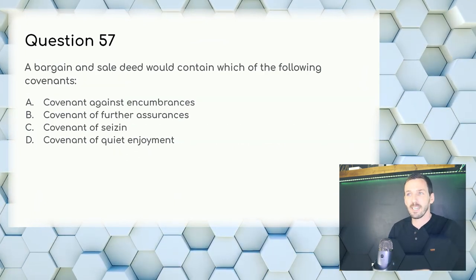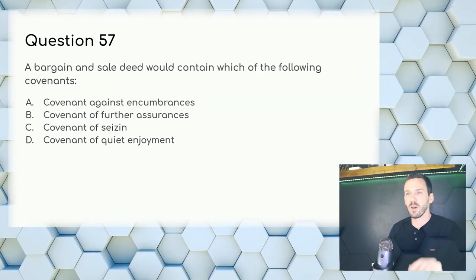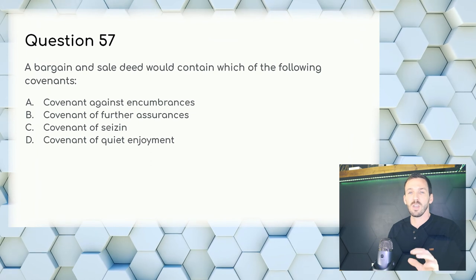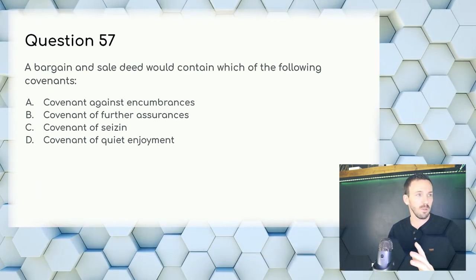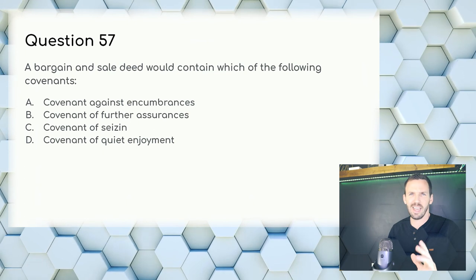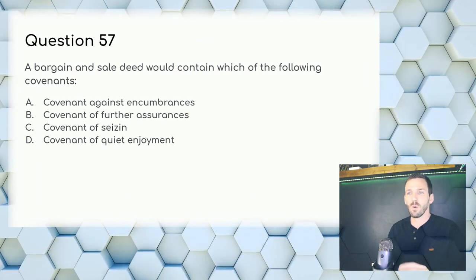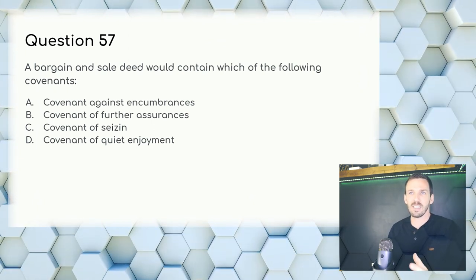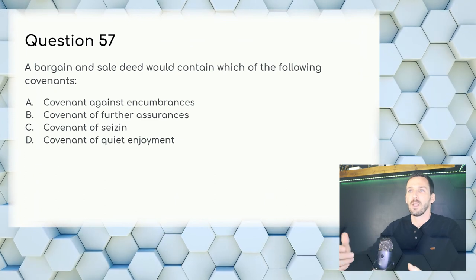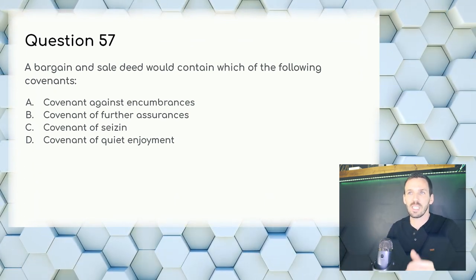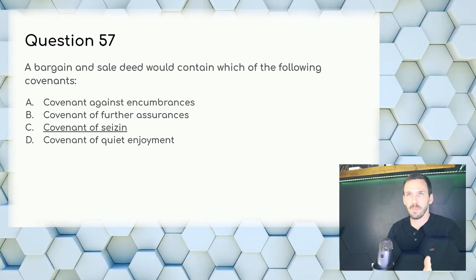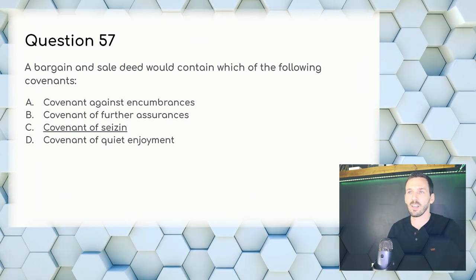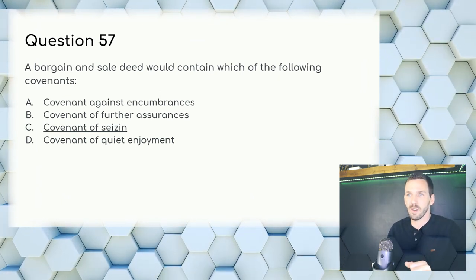Question 57: A bargain and sale deed would contain which of the following covenants? Answer: C — covenant of seisin (S-E-I-S-I-N), which means the grantor promises the grantee that he or she is getting a fee simple to the property. A bargain and sale deed must have that covenant.